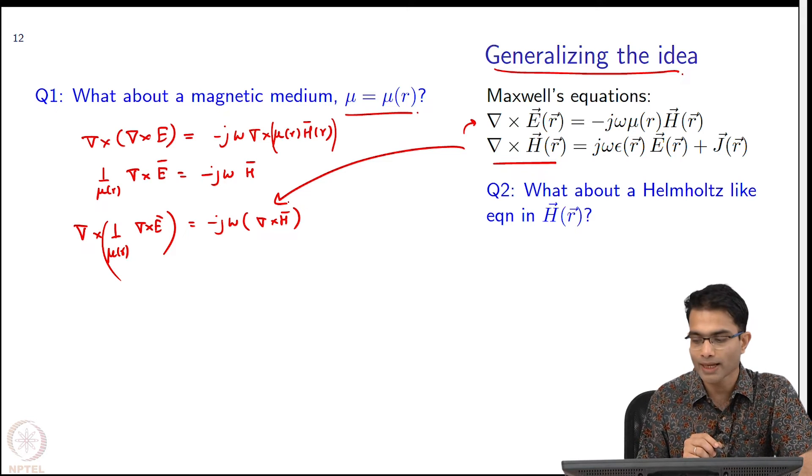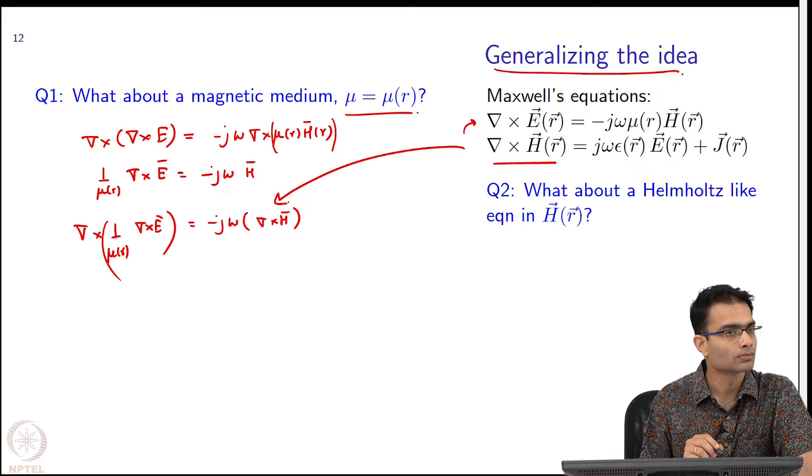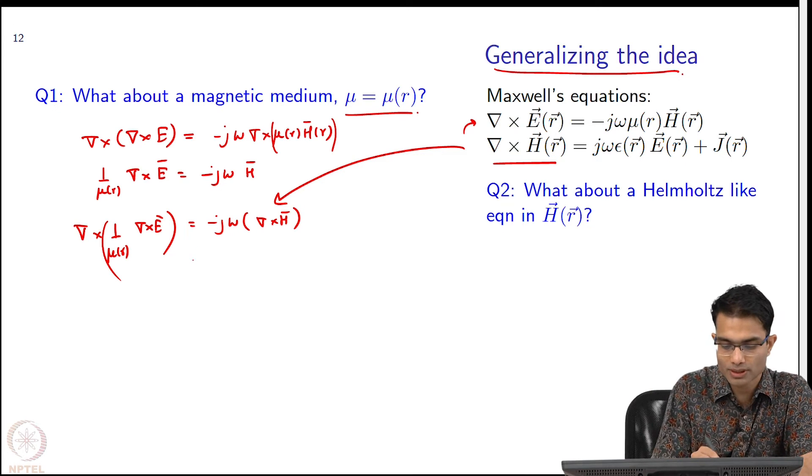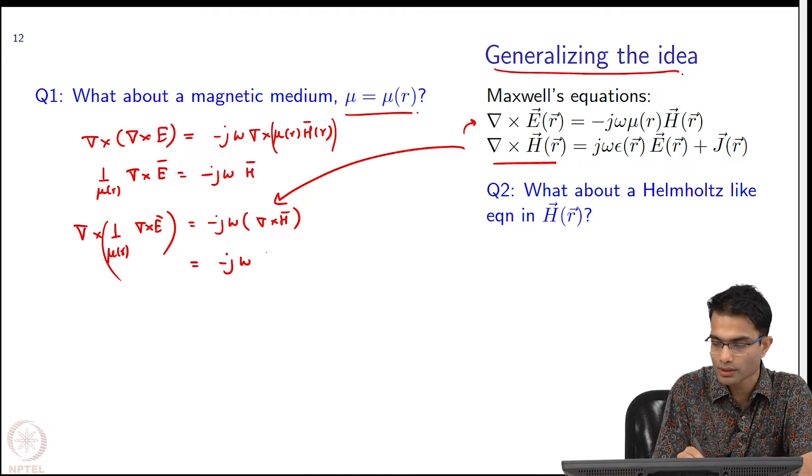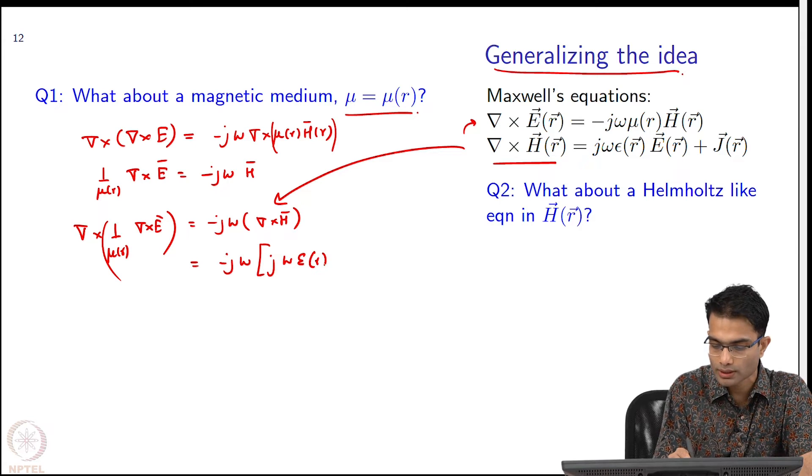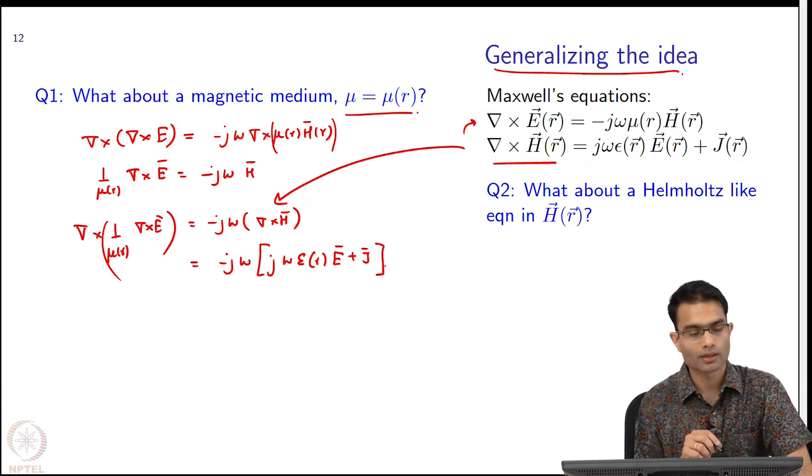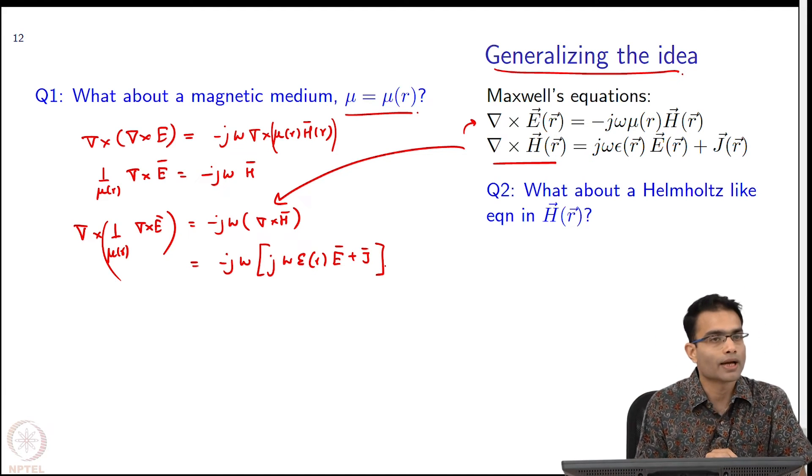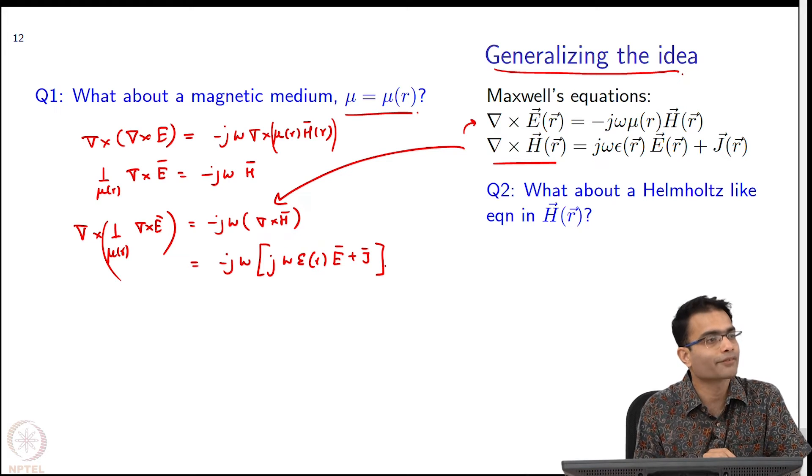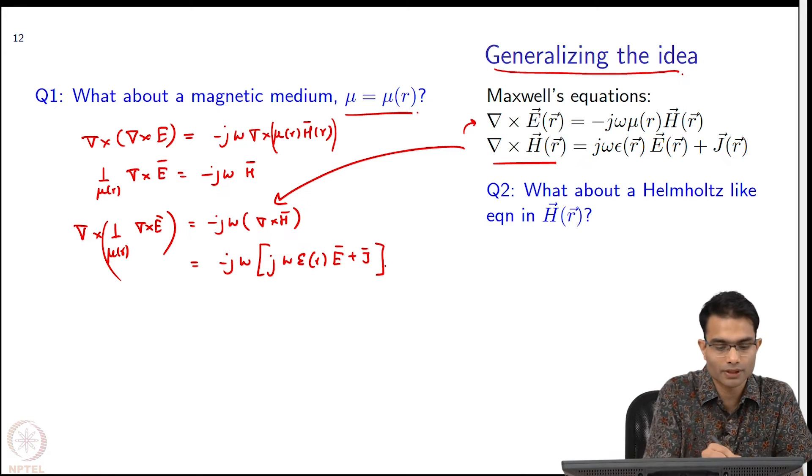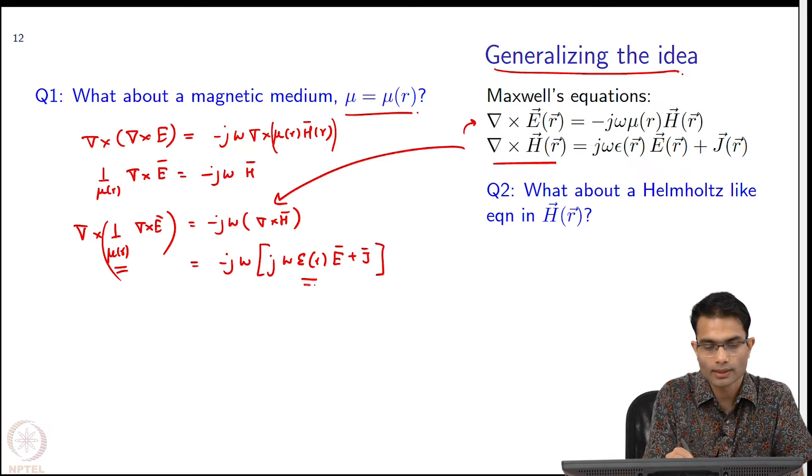So, by doing this would I have eliminated H? Yes right, because the next step itself I write minus j omega and I substitute over here j omega epsilon r E plus j.